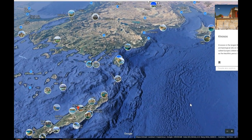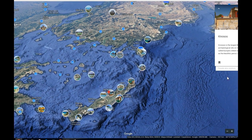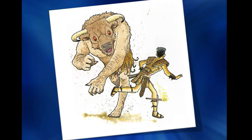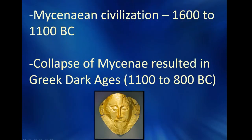Something happened to the Minoans — they kind of vanish. Their civilization will largely be sort of replaced by this group known as the Mycenaeans. Around 1600 to 1100 BCE, the Mycenaeans start to flourish. And here is a Mycenaean funeral mask.